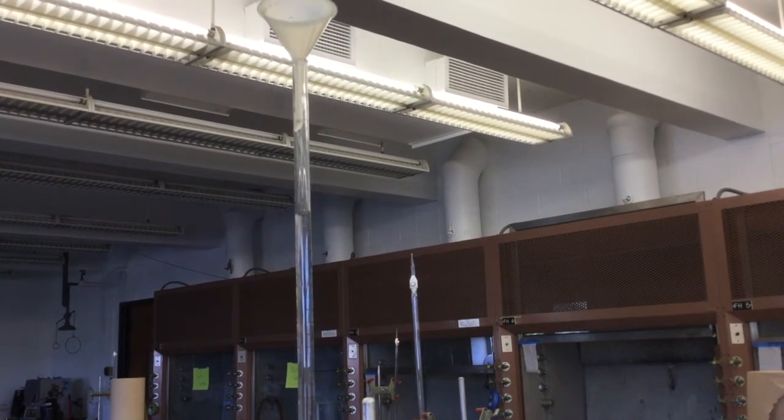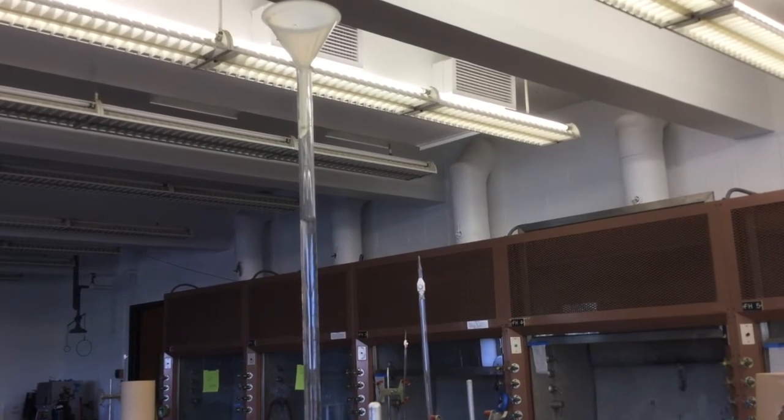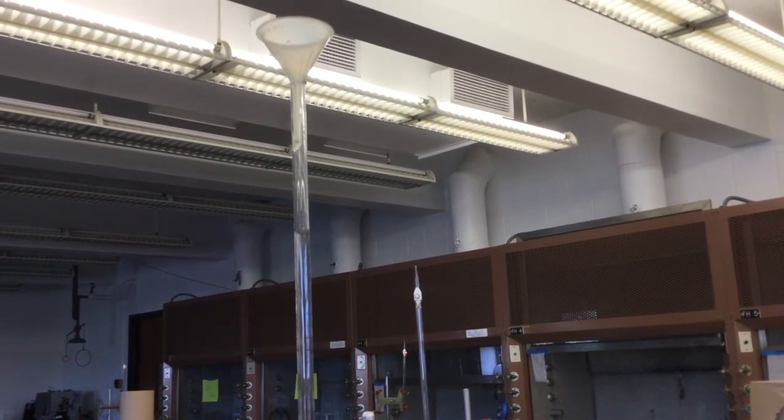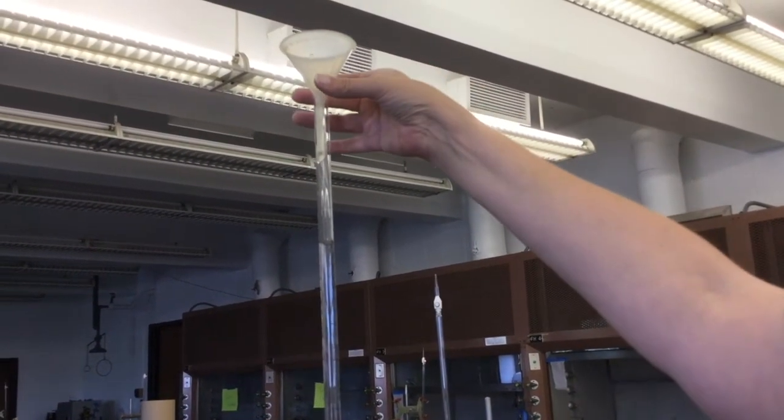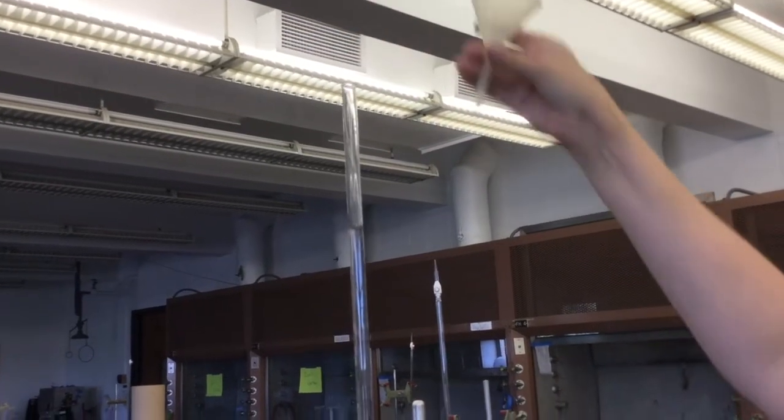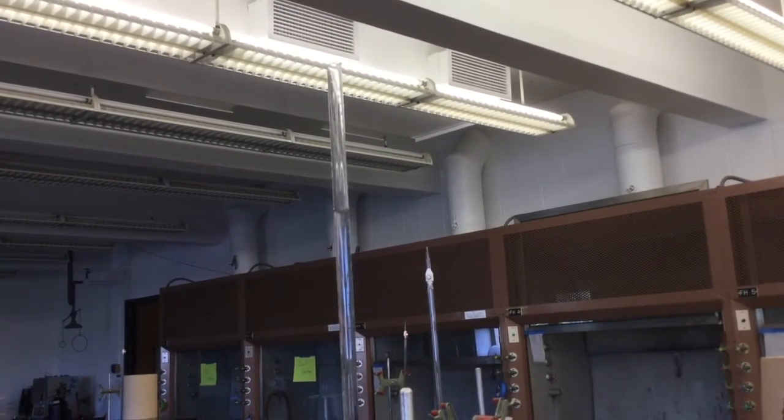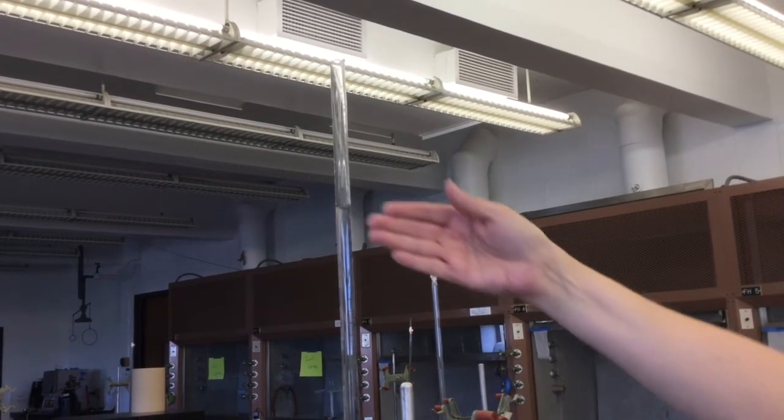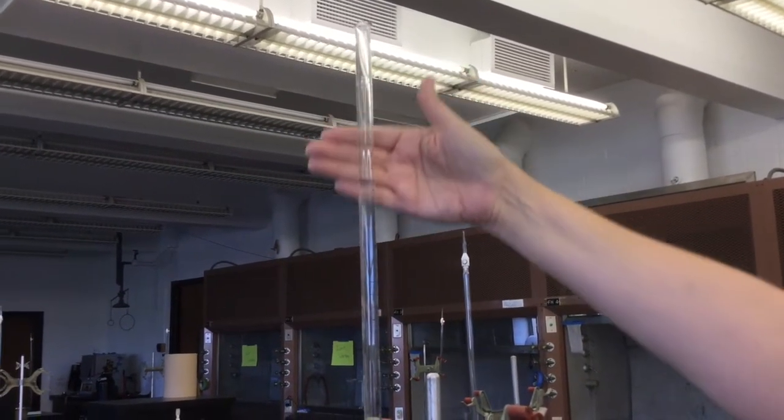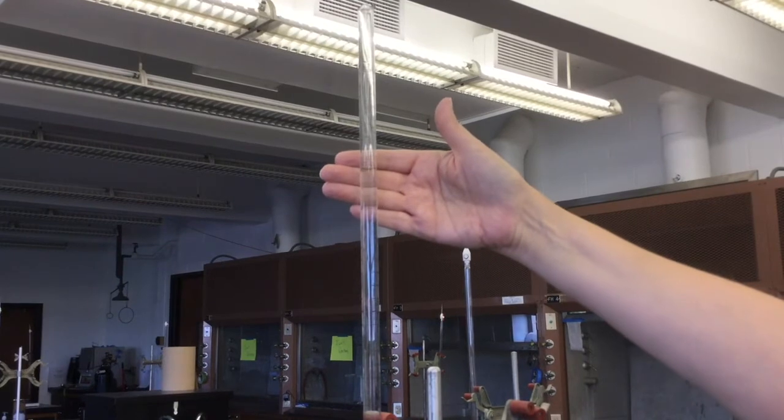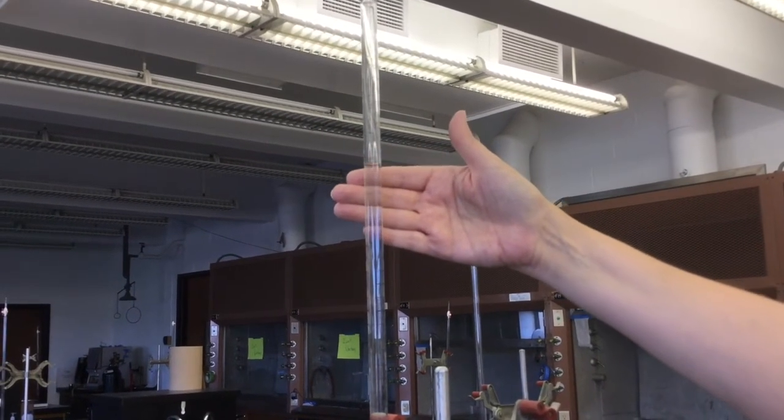Before you begin, you're going to need to fill your burette. Once you have filled it with the funnel, you need to remove the funnel from the top so that you don't have continuing liquid dripping down and changing your volume. Make sure that your volume is between 0 and 10 milliliters so that you have plenty of liquid to use for your titration.